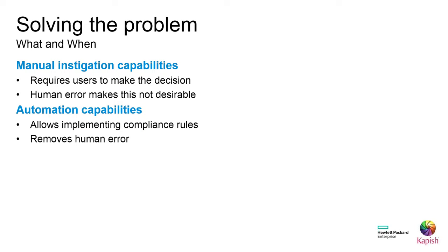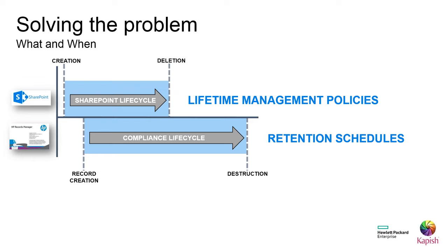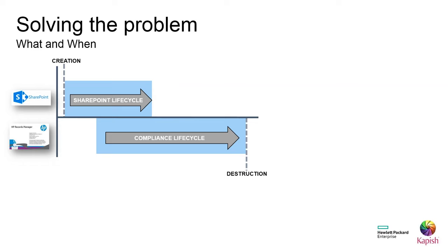Returning to the compliance life cycle: this is managed in HPRM using retention schedules, where rules around retention and destruction can be defined. In SharePoint, the integration provides Lifetime Management Policies, which govern if and when a record is created and when content is removed from SharePoint. With a more complex lifetime management policy, it is possible to nominate the conditions under which a record is created, when content is finalised, and finally when content is removed from SharePoint — giving you the ability to define quite complex rules.